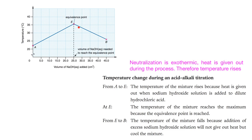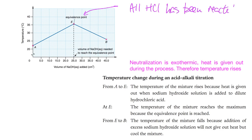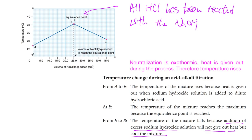From point A to point E, the temperature rises because neutralization is an exothermic reaction — heat is given out, so the temperature rises. Point E is the equivalence point, meaning all the HCl has reacted with the NaOH. Beyond point E, addition of excess NaOH will not give out heat but will cool the mixture. You need to know how to explain the temperature change from A to E and also from E to B — both parts are very important.